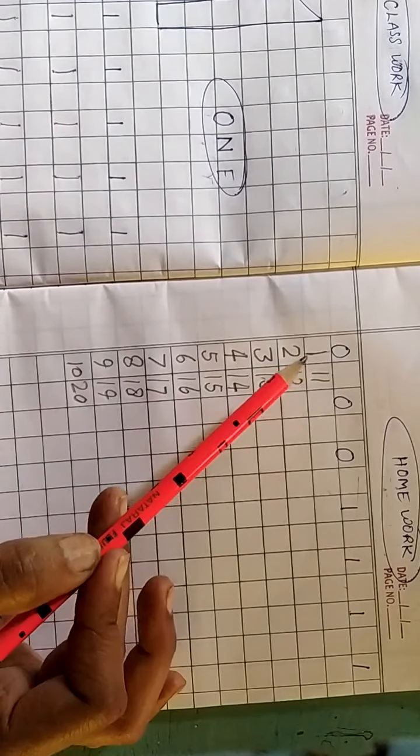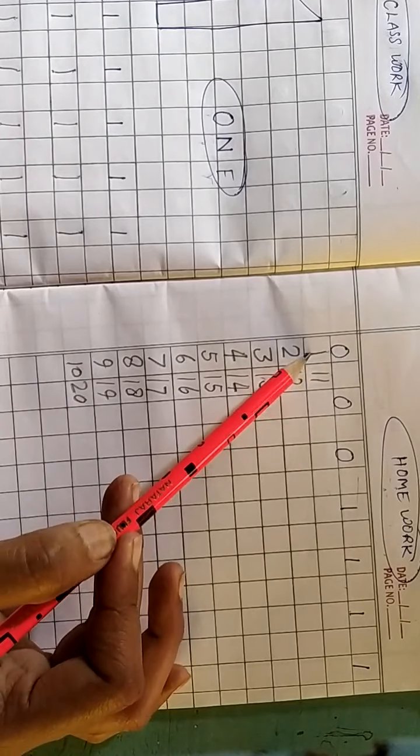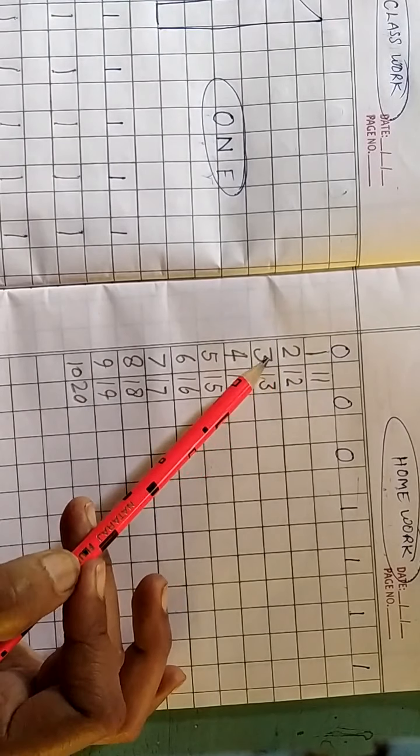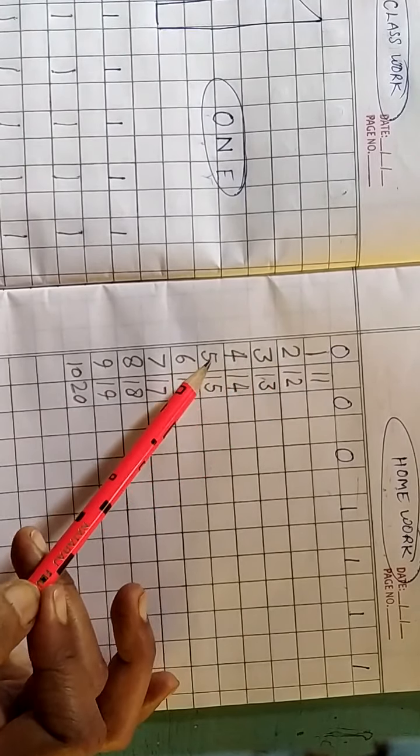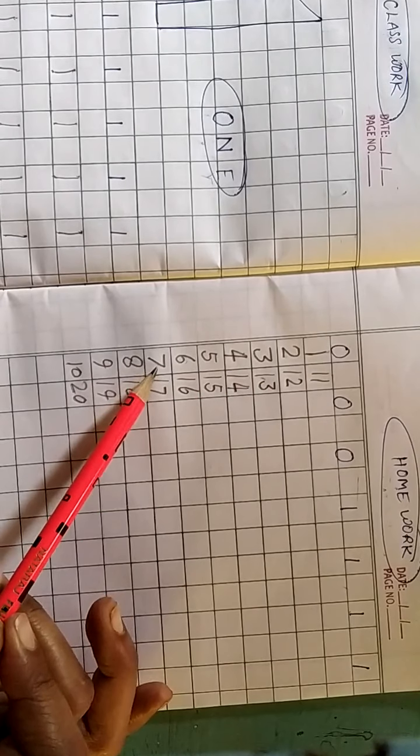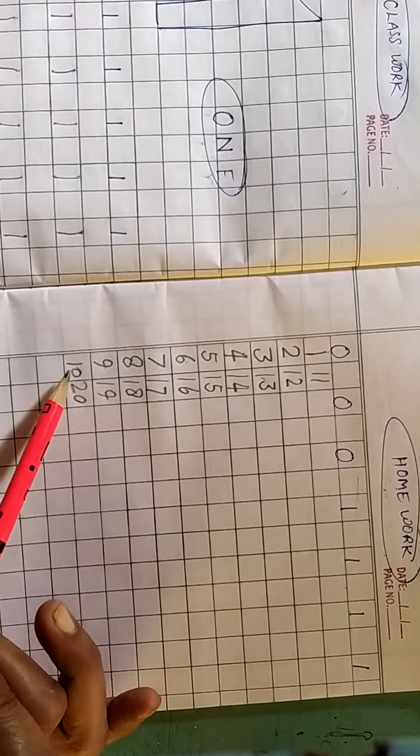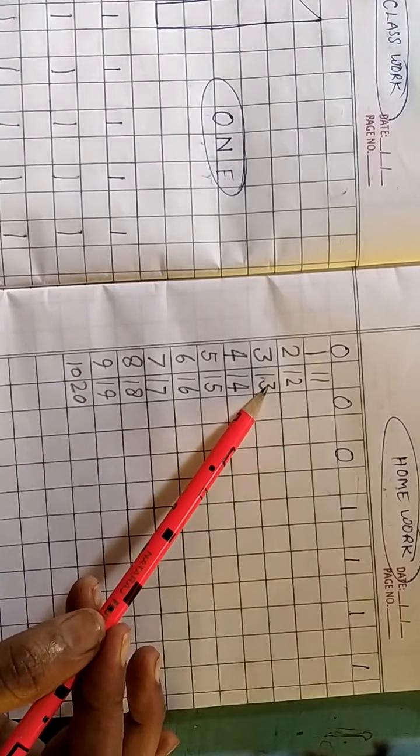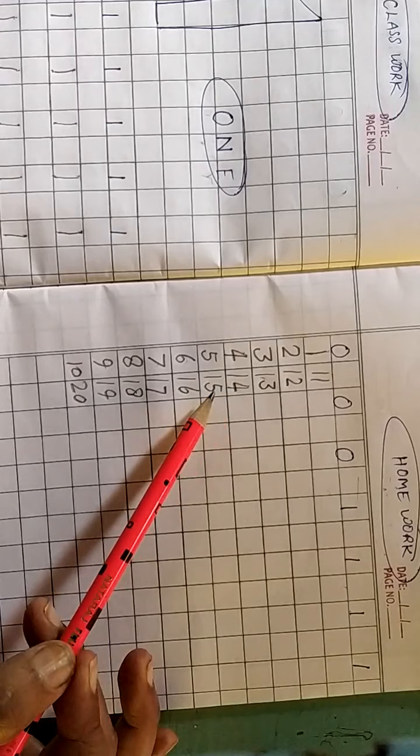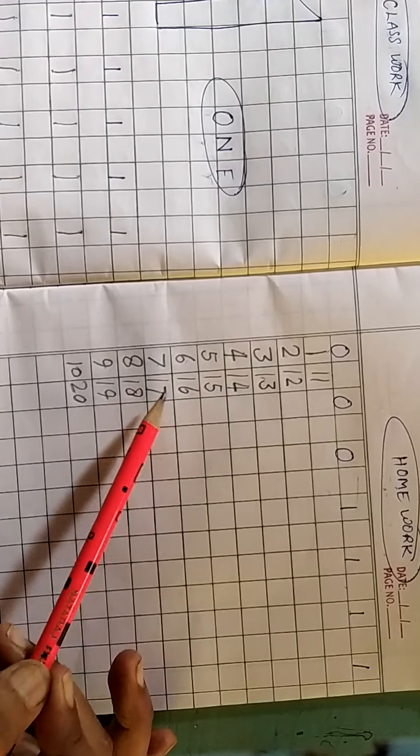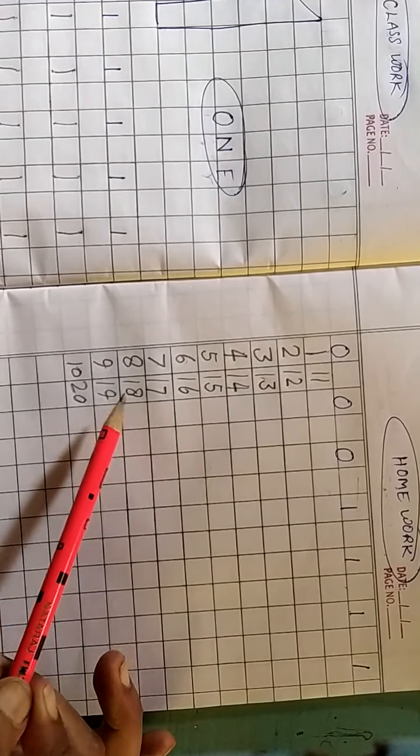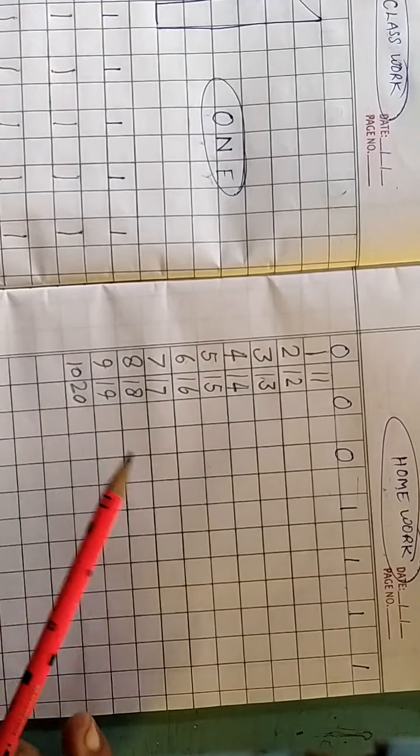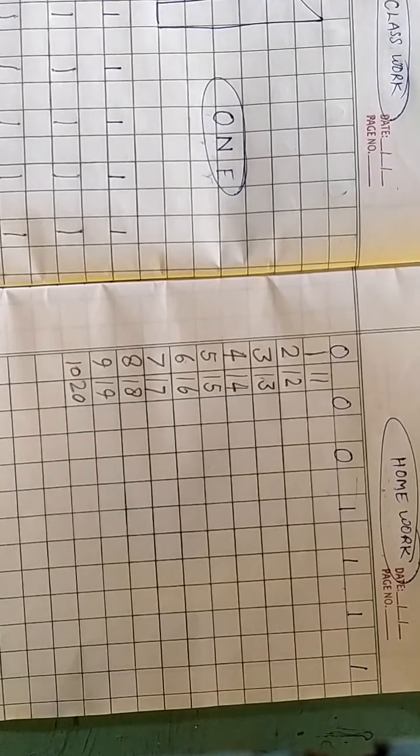Once again, I'm reading it once more. 0, 1, 2, 3, 4, 5, 6, 7, 8, 9, 10, 11, 12, 13, 14, 15, 16, 17, 18, 19, and 20. Okay? Thank you!